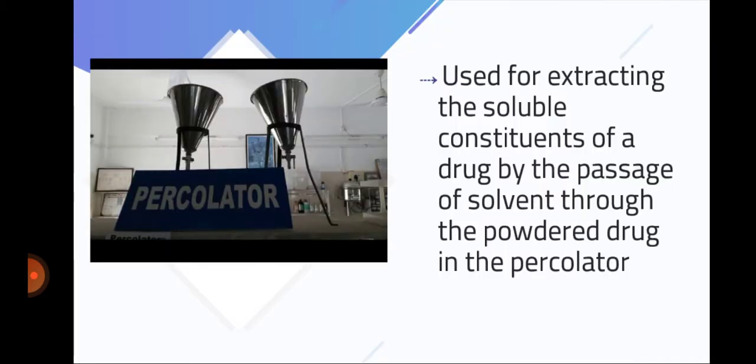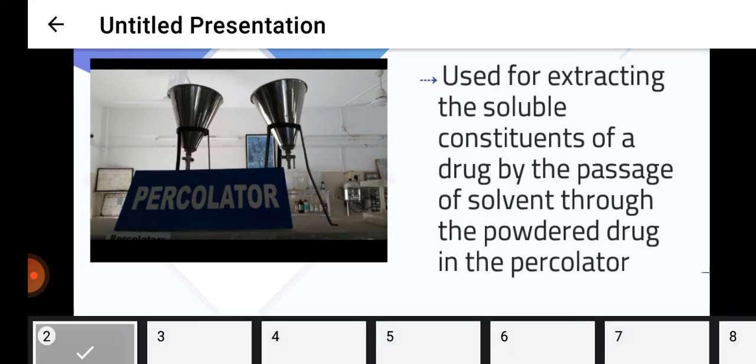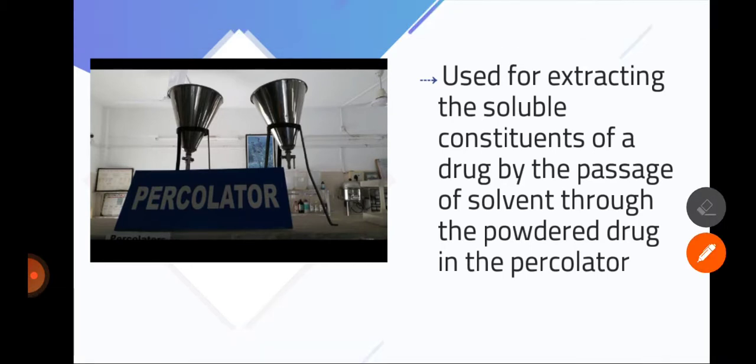Percolator is used for extracting the soluble constituents of a drug by the passage of solvent through the powdered drug in the percolator. If this instrument is used, then you have to identify it.